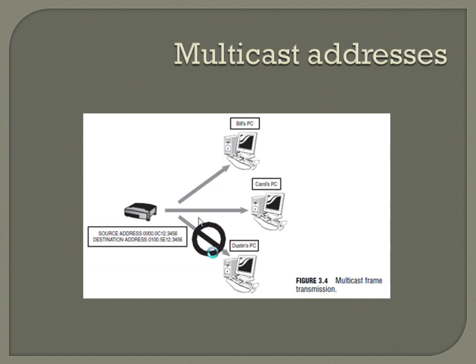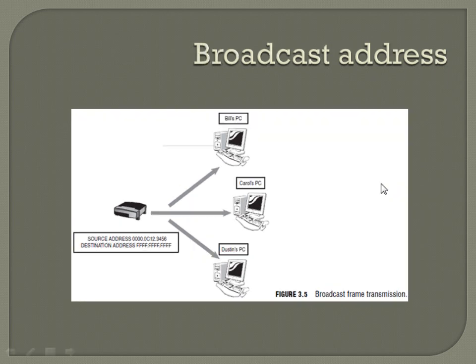Additionally, there are multicast addresses for data link — when you're sending to multiple nodes on that network but not all of them. There's a certain set of MAC addresses reserved for multicast. You can see the destination address right here: 0100.5E123456. Anytime you see a Layer 2 MAC address going to 0100.5E anything, it's going to be a multicast address. And then the broadcast address sends to everybody — anytime you see a broadcast address it's going to be all ones, so the MAC address will be all Fs all the way across.